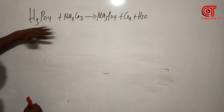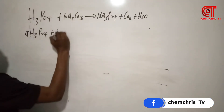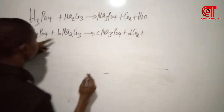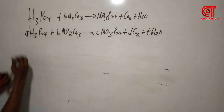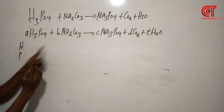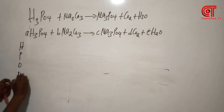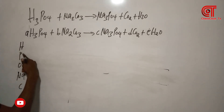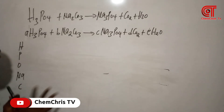The first step is to assign alphabets to all the species. In this complex equation, the elements present are: hydrogen, phosphorus, oxygen, sodium, and carbon — five elements in total. Let's take it step by step.